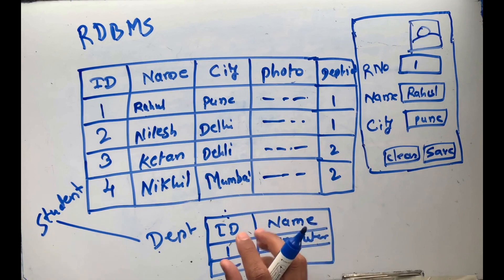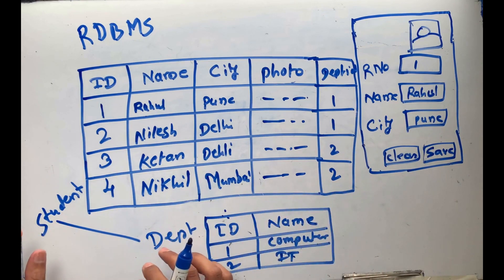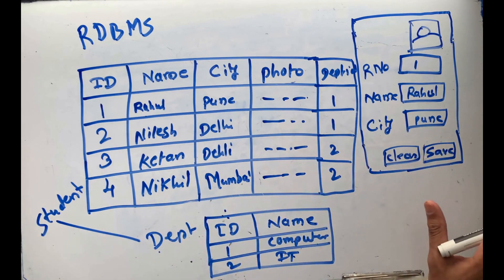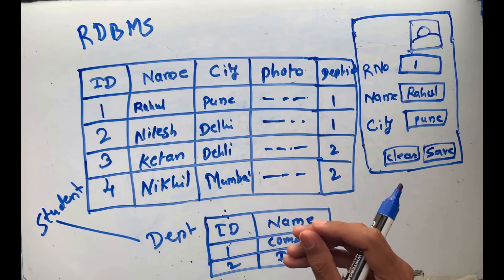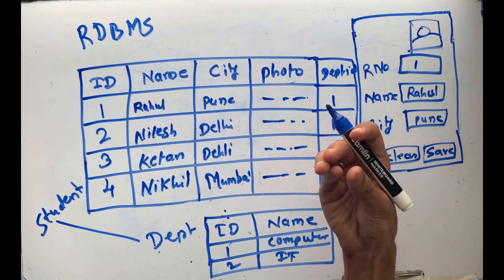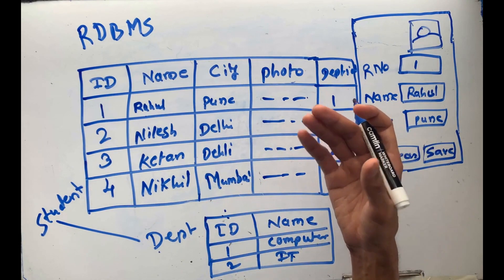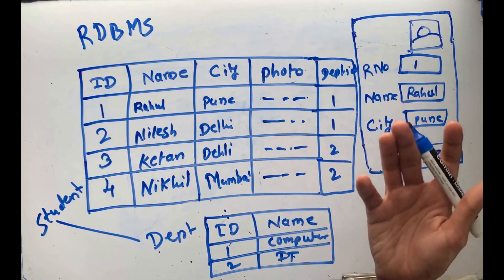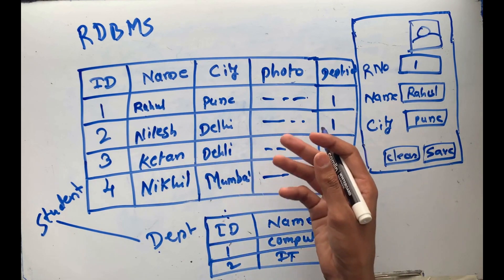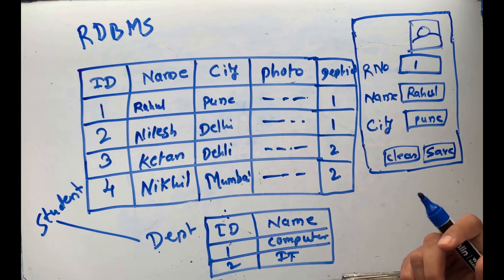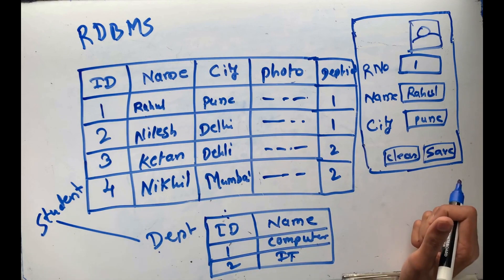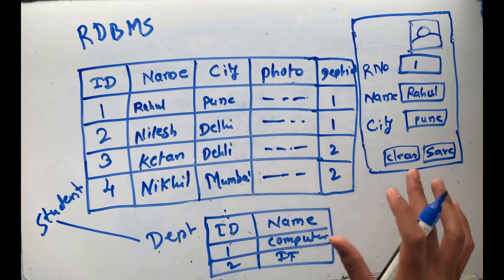I am giving the example of only two tables - student and department - but in practice there are lots of tables belonging to a particular system. For example, if we have to design a database for a School Information Management System (SIMS), we need to identify what different entities come into the picture: department, student, faculty, class, subject, mark sheet. All these things are entities. Why is the relational model so popular? Because it is very easy to understand.